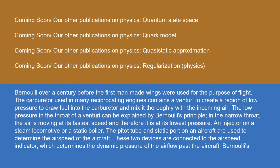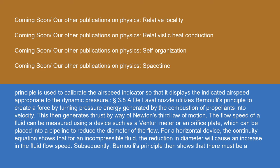The pitot tube and static port on an aircraft are used to determine the airspeed of the aircraft. These two devices are connected to the airspeed indicator, which determines the dynamic pressure of the airflow past the aircraft. Bernoulli's principle is used to calibrate the airspeed indicator so that it displays the indicated airspeed appropriate to the dynamic pressure.